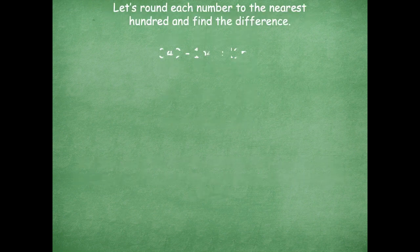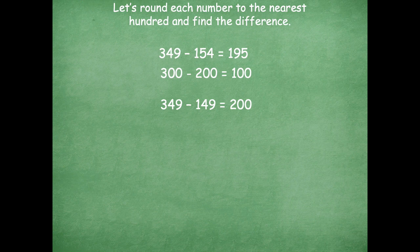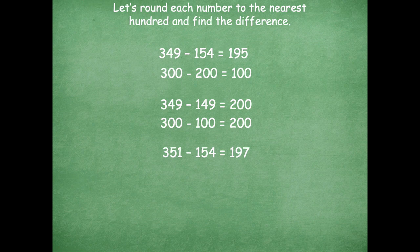Let's round each number to the nearest hundred and find the difference. We have 349 minus 154 — round those to 300 and 200, which gives 100. For 349 minus 149, I would round to 300 minus 100. For 351 minus 154, I would round to 400 minus 200, which equals 200.